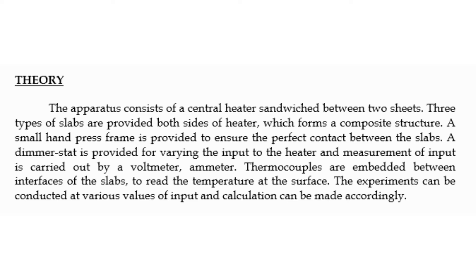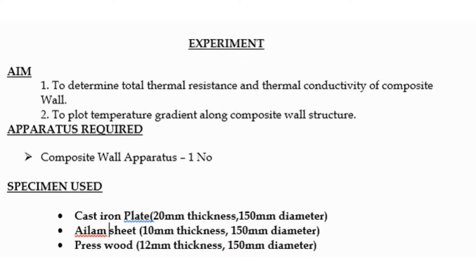The dimmer stat is provided for varying the input to the heater, and measurement of input is carried out by voltmeter and ammeter. Thermocouples are embedded between the interfaces of slabs to read the temperature at the surfaces. The experiment can be conducted at various values of input, and calculations can be made accordingly. The aim is to determine the total thermal resistance and thermal conductivity of the composite wall, and to plot the temperature gradient along the composite wall structure.